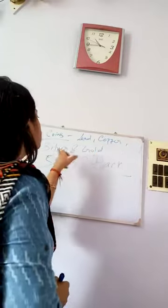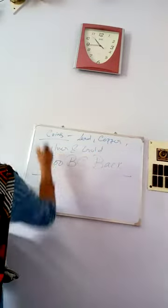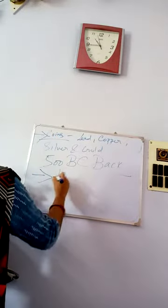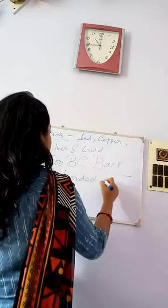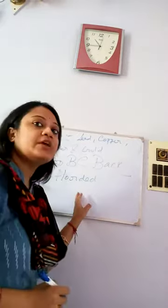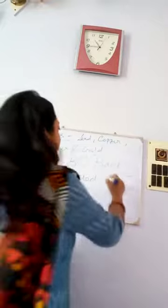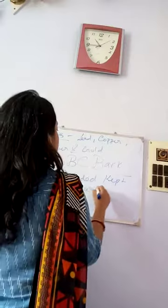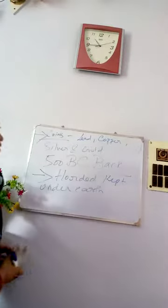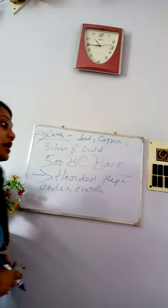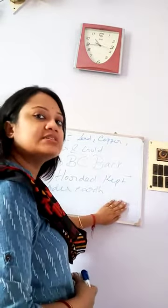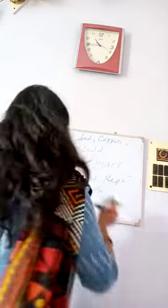Coins can be made of lead, copper, silver, and gold. In ancient times, coins were hoarded. As there was no banking system, coins were hoarded and kept under the earth as a reserve, because people believed they were of valuable importance and should be kept under special care.